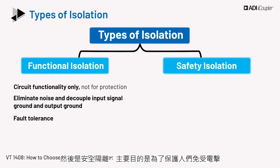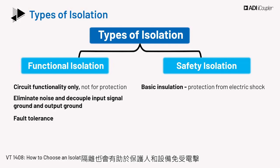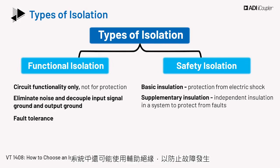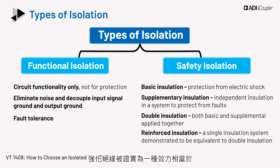Then there is safety isolation. This is required primarily to protect people from electric shock. There is low voltage electronics and user operation on one side and higher power levels at the switches. Isolation also helps protect people and equipment from electric shock. Apart from basic insulation, supplementary insulation may be present in a system to protect against faults. There is double insulation, which is both basic and supplemental applied together. Reinforced insulation is a single insulation system demonstrated to be equivalent to double insulation.